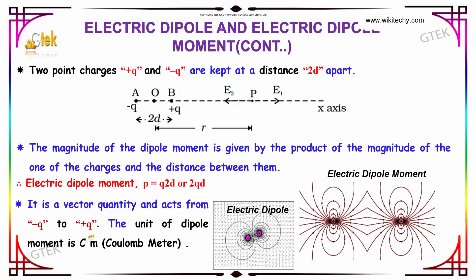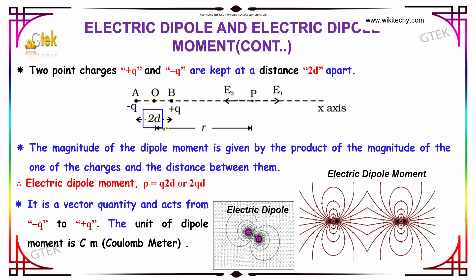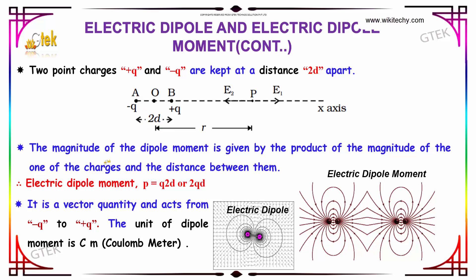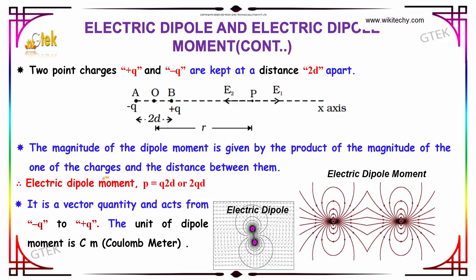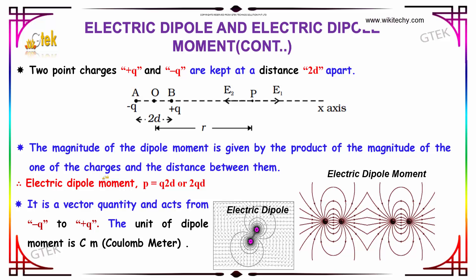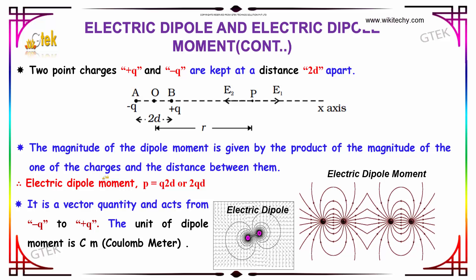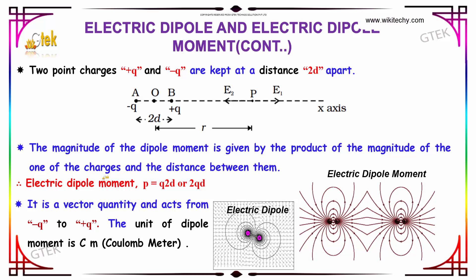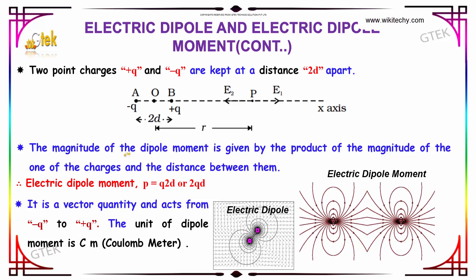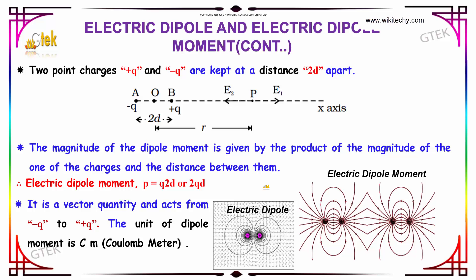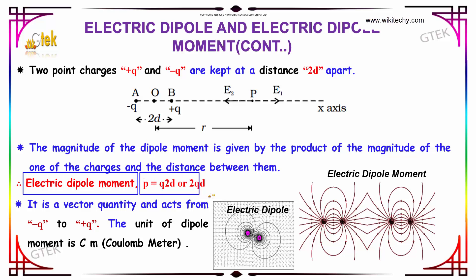Let us derive the electric dipole moment. Consider two point charges, plus Q and minus Q, kept apart at a distance of 2D. The magnitude of the dipole moment is given by the product of the magnitude of one of the charges and the distance between them.